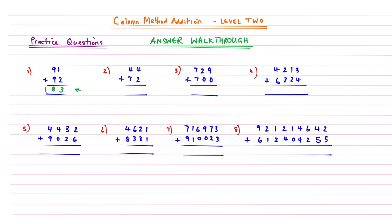Question two: starting from the right — 4 add 2 is 6, then 4 add 7 gives 11, a two-digit number, so we write that under the invisible column. Question three: 9 add nothing is 9; 2 add nothing is 2; then two sevens gives 14 — because it's a two-digit number we write that under the invisible column, giving 1,429.